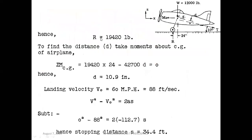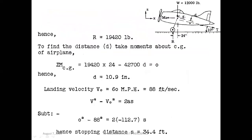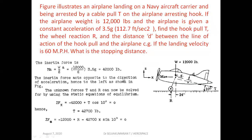So we have calculated all the parameters: T, the reaction R, the distance D between the CG and the line of action of the pull, and the stopping distance, 34.4 feet. This is given in FPS units; in exams you will get SI units where G is 9.81 m/s², whereas here G equals 32.2 feet per second squared.